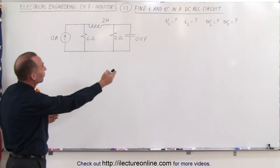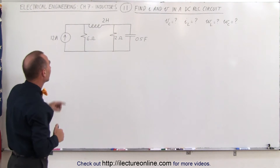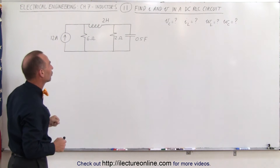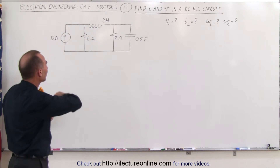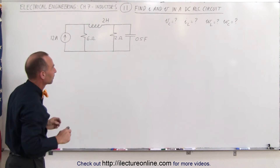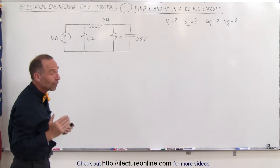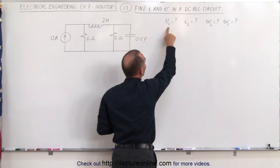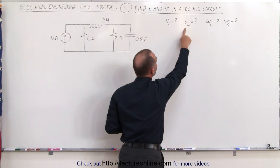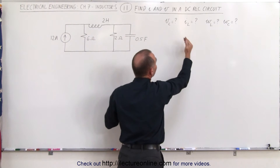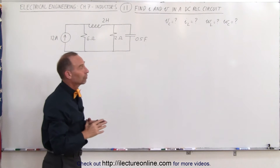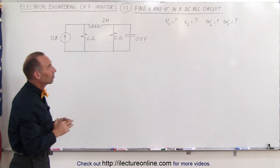We still have a capacitor and an inductor in the circuit, but in this case we have a current source instead of a voltage source, so we're sending 12 amps through the circuit. What we're trying to find is the voltage across the capacitor and the current through the inductor at steady state, as well as the energy stored in both the inductor and the capacitor at steady state.